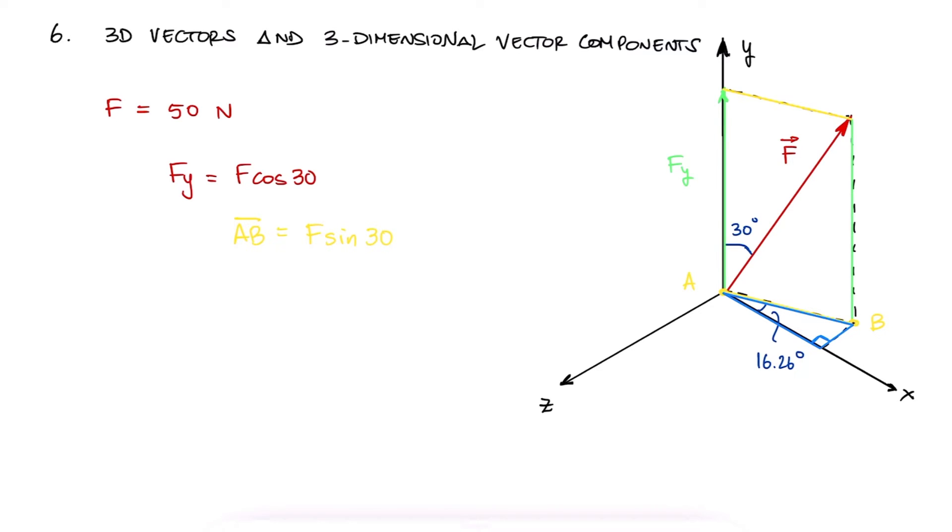With that hypotenuse and the angle shown, we can decompose that into the x component of f with 25 cosine of 16.26 and into the z component of f with 25 sine of 16.26.